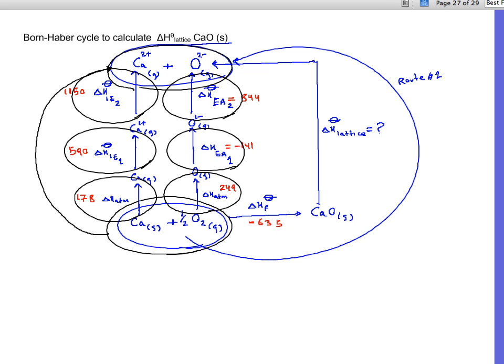So let's just put them next to each other. Delta H formation plus delta H lattice, this is equal to sum of the six terms: delta H atomization of calcium plus the first ionization energy of calcium